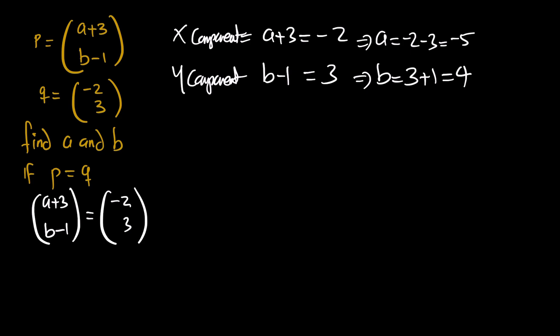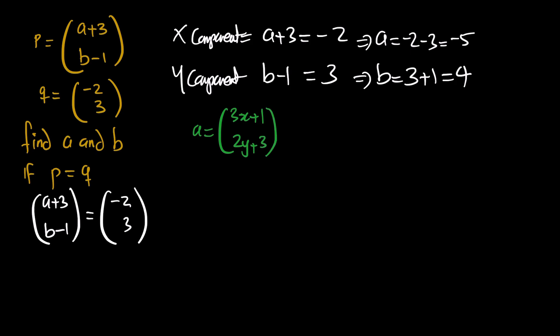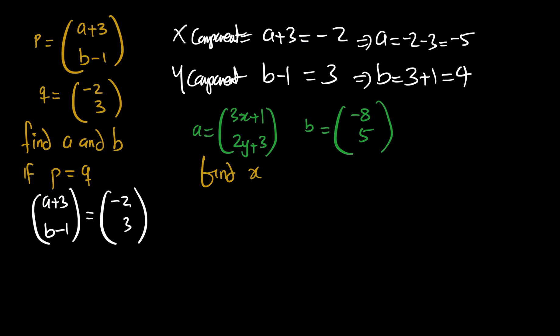We can find the values of a and b because we can set the vectors equal to each other since we're told the two vectors are actually equal. Another example: vector a has x-component (3x + 1) and y-component (2y + 3); vector b has x-component negative 8 and y-component 5. Find x and y given vector a equals vector b.